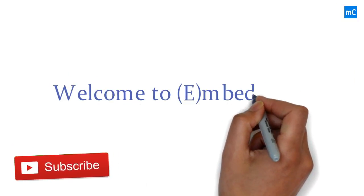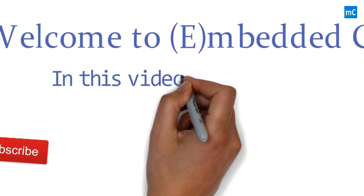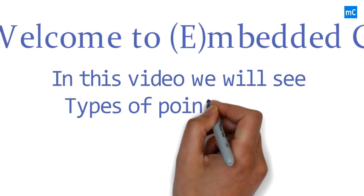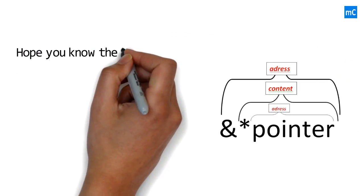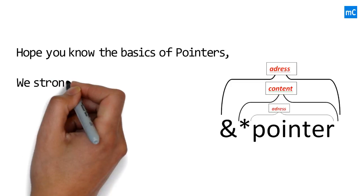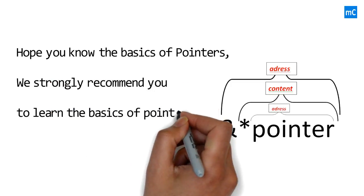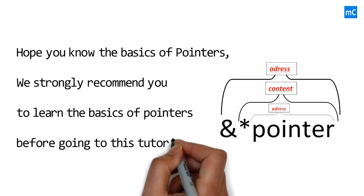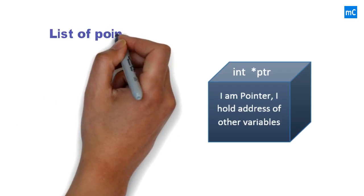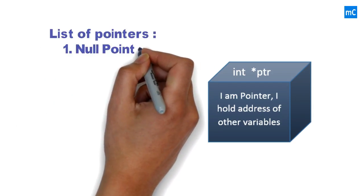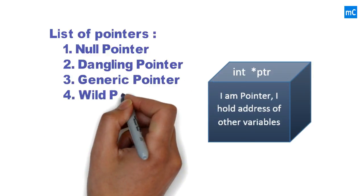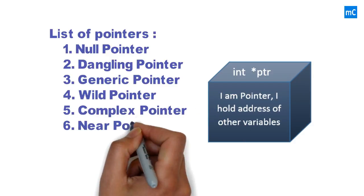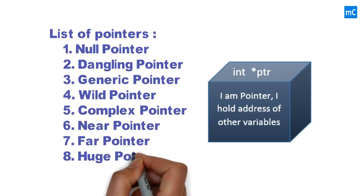Welcome to emiratese.com. In this video we will see types of pointers in C language. Hope you know the basics of pointers — we strongly recommend you to learn the basics of pointers before going to this tutorial. List of pointers: null pointer, dangling pointer, generic pointer, wild pointer, complex pointer, near pointer, far pointer, and huge pointer.